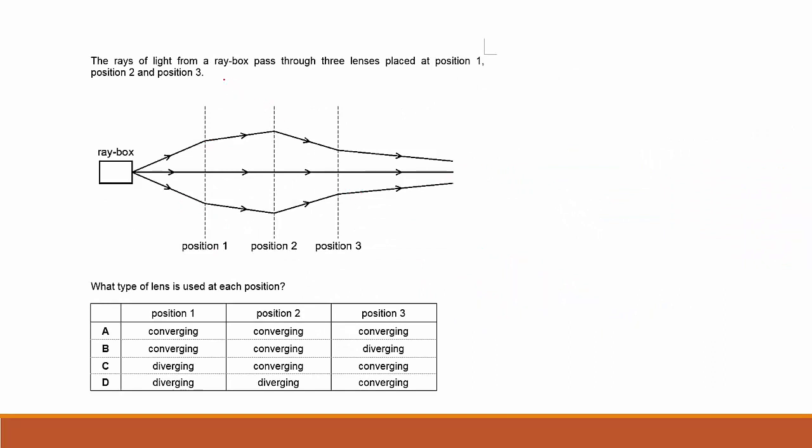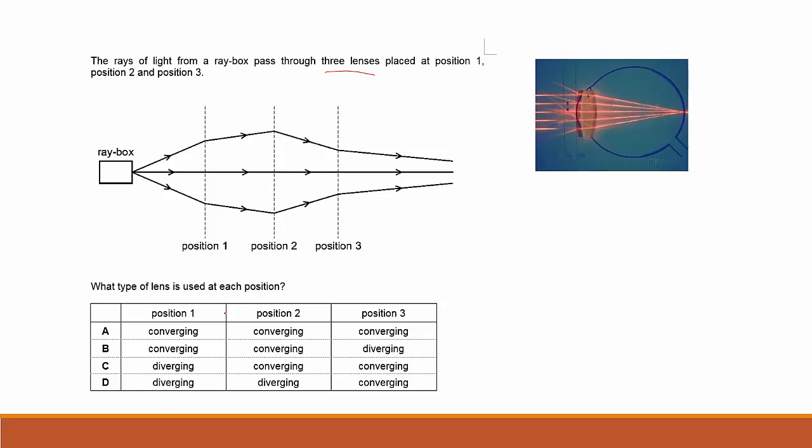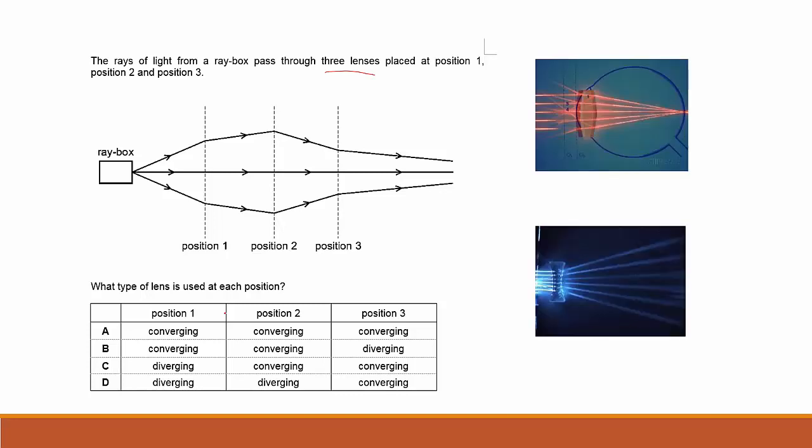This question asks about light rays from a ray box passing through three different lenses at position 1, position 2, and position 3. What type of lenses are used at each position? The choices are converging and diverging. First of all, you have to realize converging is something like this and diverging is something like this.